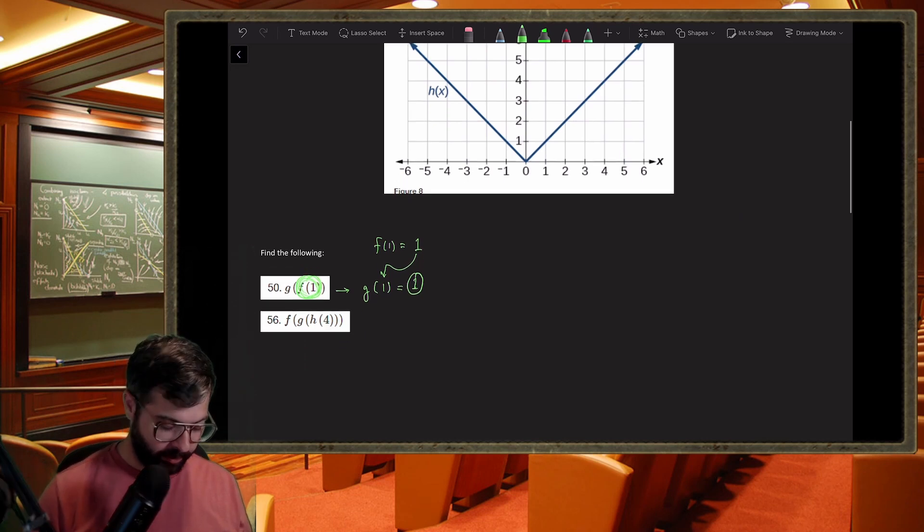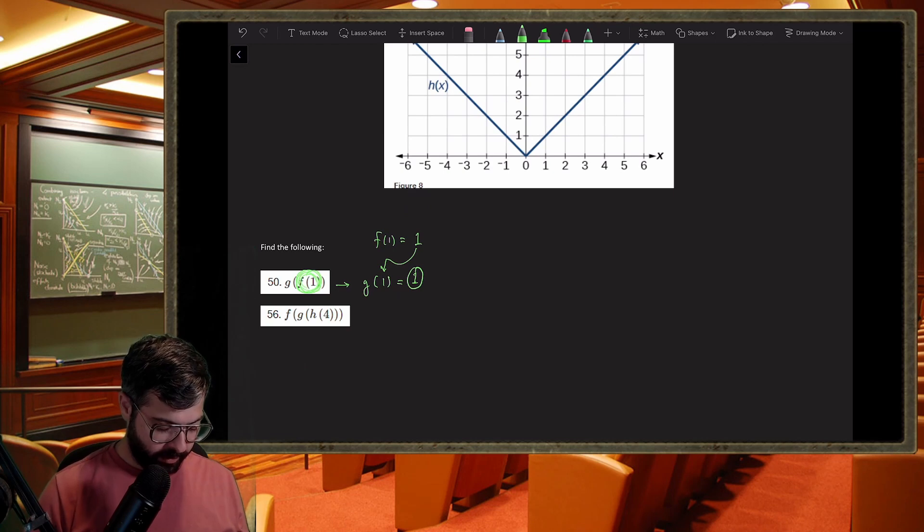For this next one it's going to be a little bit more interesting because we actually chain it twice. So what this says is find f of g of h of four.